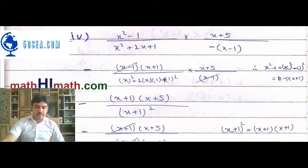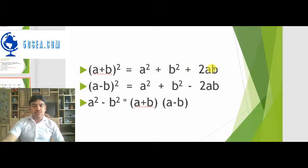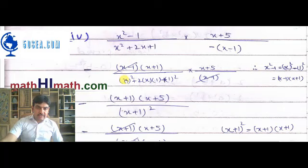The formula is a squared plus 2ab plus b squared equals a plus b whole squared. Here we have x squared, we have 1 squared, and 2 into x into 1. So a equals x and b equals 1. This means x squared plus 2x plus 1 is a complete square: x plus 1 squared.